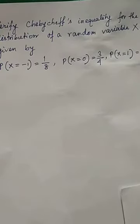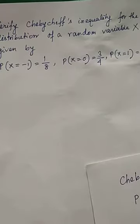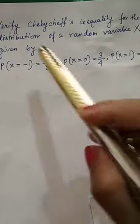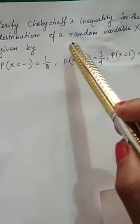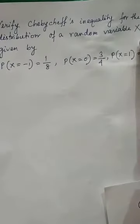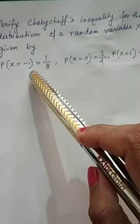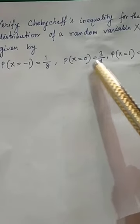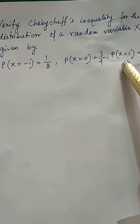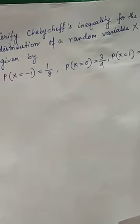Dear students, here is a question on Chebyshev's inequality in discrete joint distribution. The question is: verify Chebyshev's inequality for the distribution of a random variable x, given by probability at x equals minus 1 is 1/8, probability at x equals 0 is 3/4, and probability at x equals 1 is 1/8.